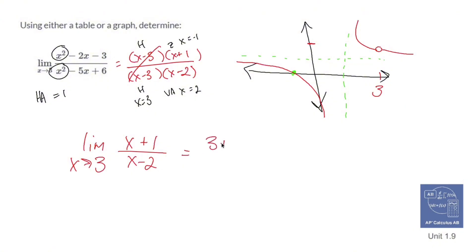Plug in 3, 3 plus 1 over 3 minus 2, and that gets me 4 over 1. So my limit's going to be 4.